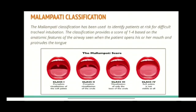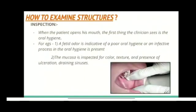This test is performed while the patient is in a sitting position and is asked to open their mouth and stick out their tongue. These structures are examined by either inspection or palpation. When the patient opens their mouth, the first thing the clinician notices is oral hygiene — for example, a fetid odor is indicative of poor oral hygiene or an infective process. The mucosa is then inspected for its color, texture, presence of ulceration, or any draining sinuses.